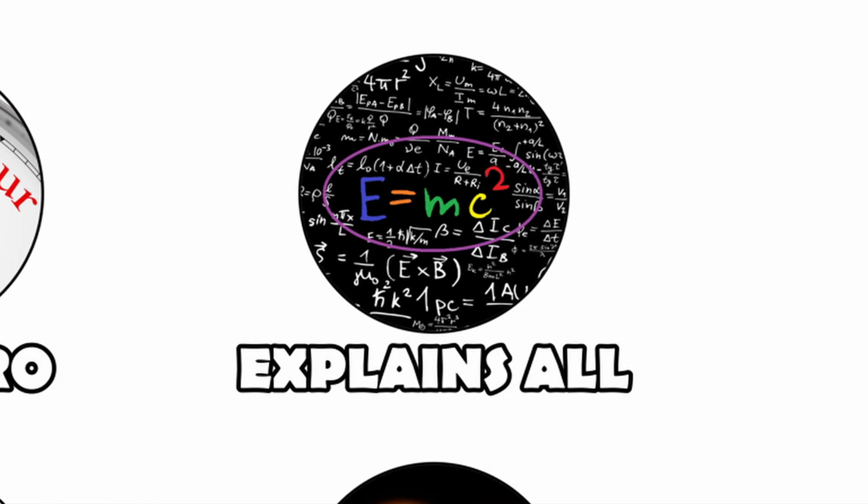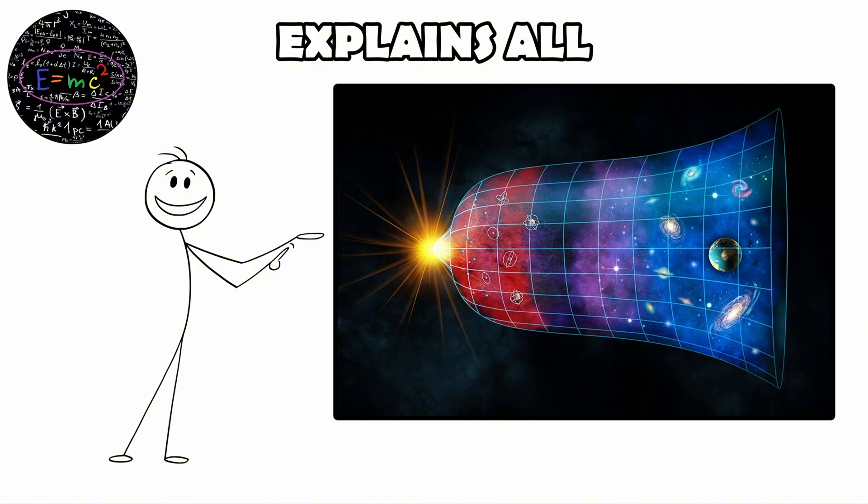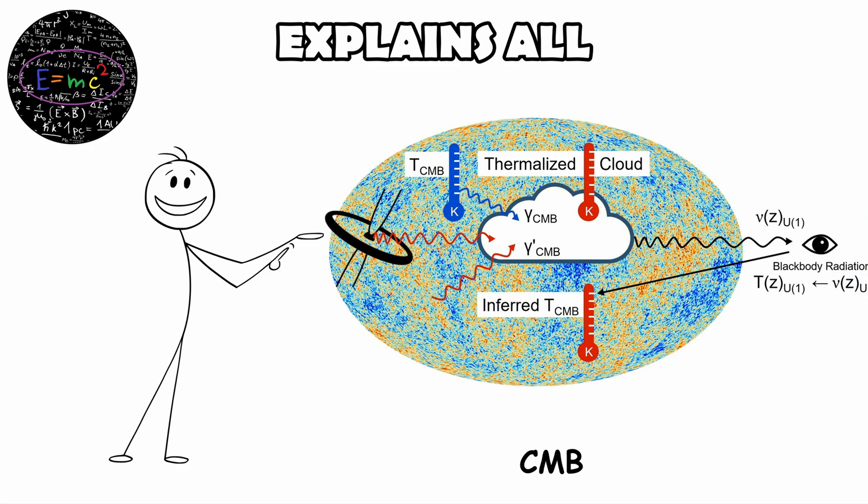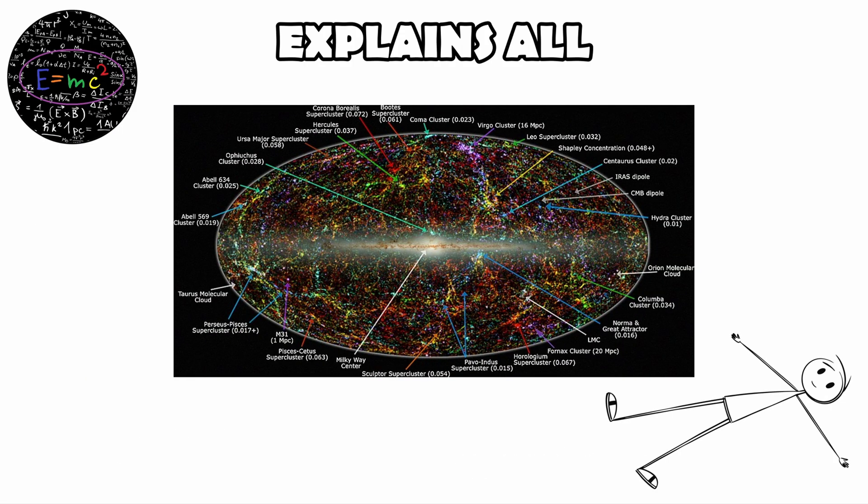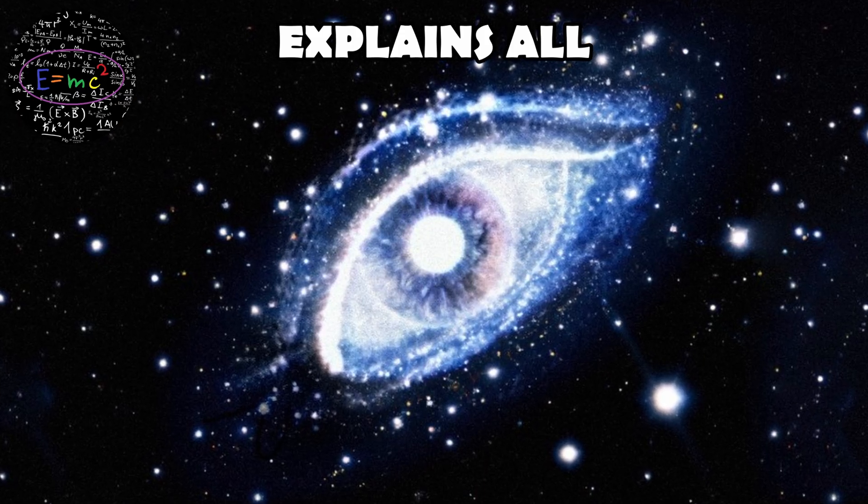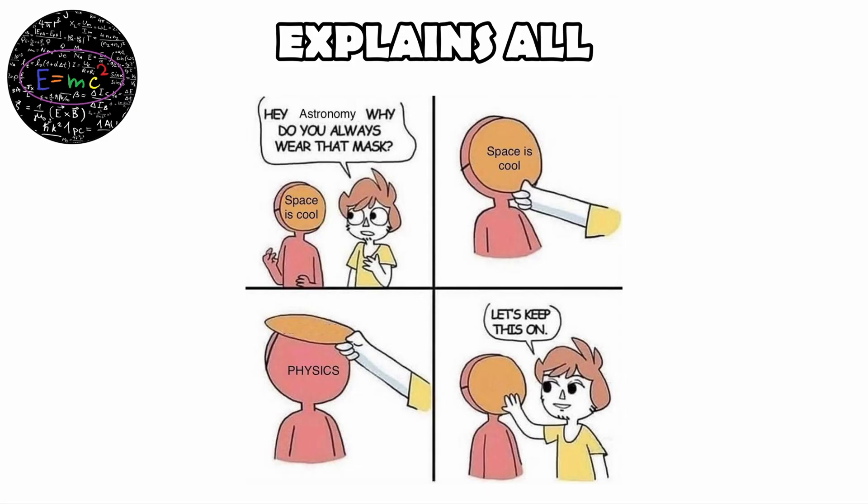Explains all. The Big Bang model is powerful, but it has limits. It explains how the universe expanded and cooled from a hot, dense beginning. It explains the origin of light elements, the structure of the cosmic microwave background, and the expansion we observe today. But it does not explain everything. For example, the Big Bang does not tell us why the universe exists in the first place. It does not identify what, if anything, caused expansion to begin, nor does it explain the deeper laws that determine why physics is the way it is. These are questions of initial conditions, the rules and triggers that set the stage for the universe we see.